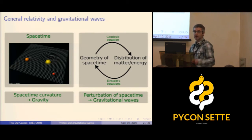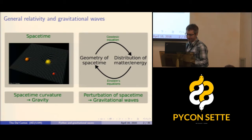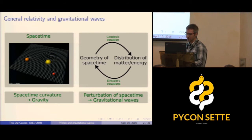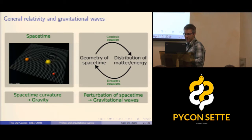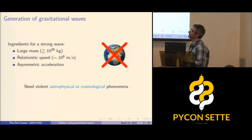A major prediction of relativity is that if we perturb the geometry — for example, by shaking the distribution of mass and energy — this perturbation will propagate and be radiated away as waves traveling at the speed of light. This theory was published 100 years ago, so it's quite remarkable that the detection was made now.